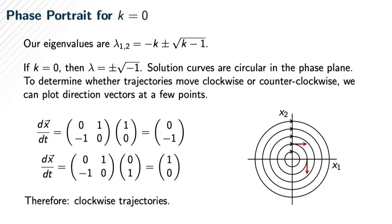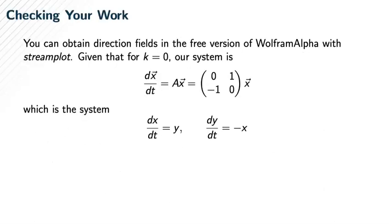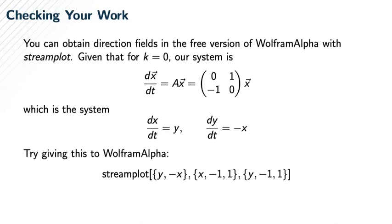If you're encountering a similar problem on a homework assignment or project, you may want to check your answer with Wolfram Alpha using the stream plot command. When k equals 0, we have two equations: dx/dt is y, and dy/dt is negative x. The stream plot command syntax is something like this.